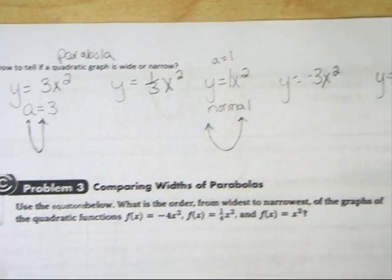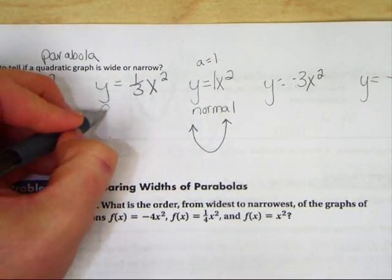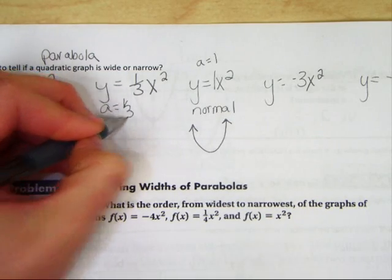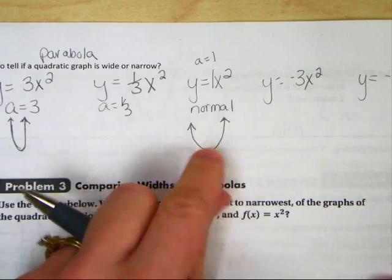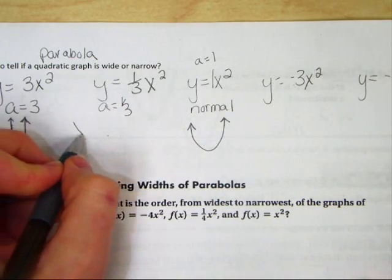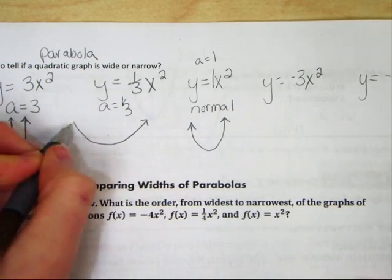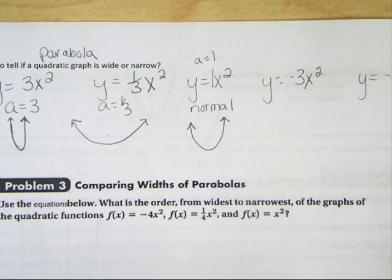Now, let's compare that with y equals 1 third x. A is 1 third, the number in front of x squared. What that's going to do is it's going to take your normal parabola and it's going to make it very wide.